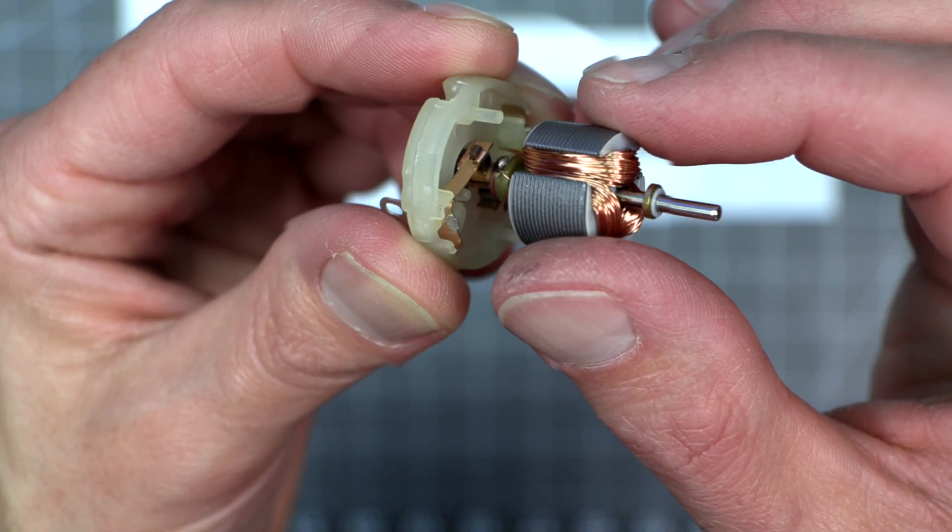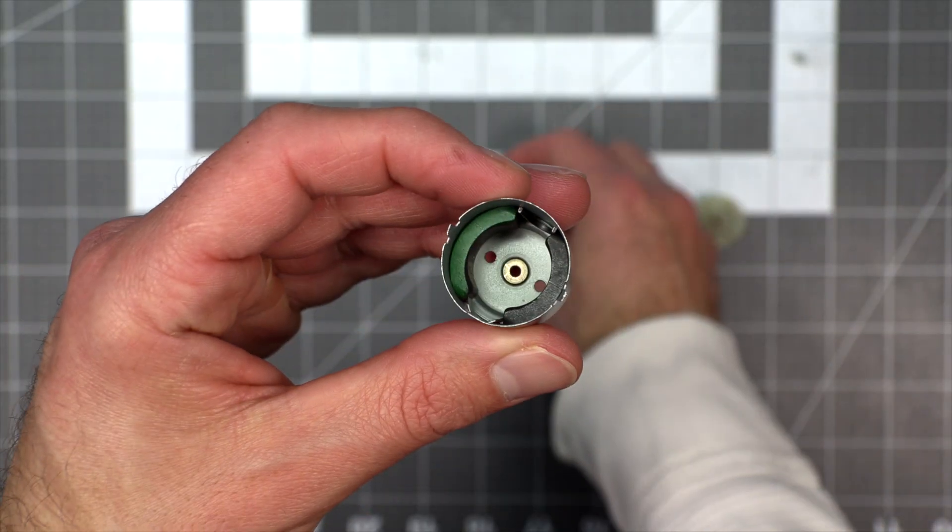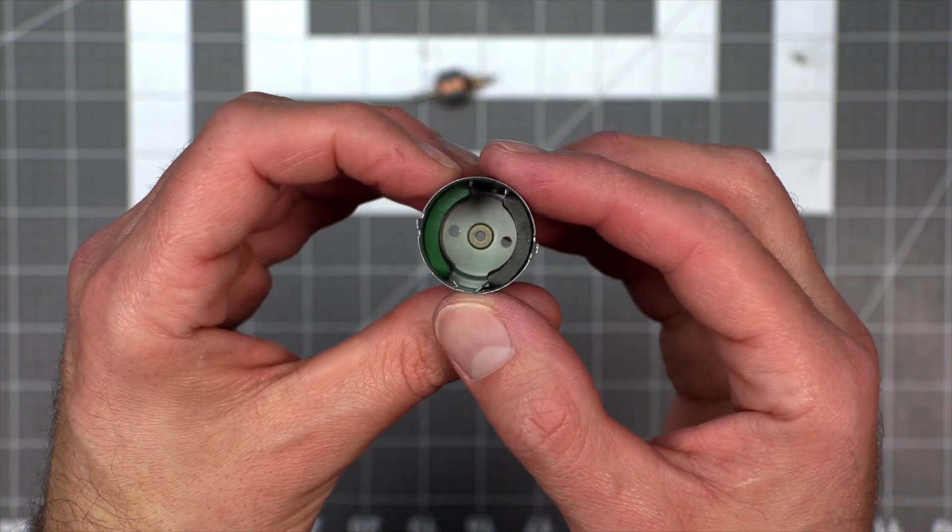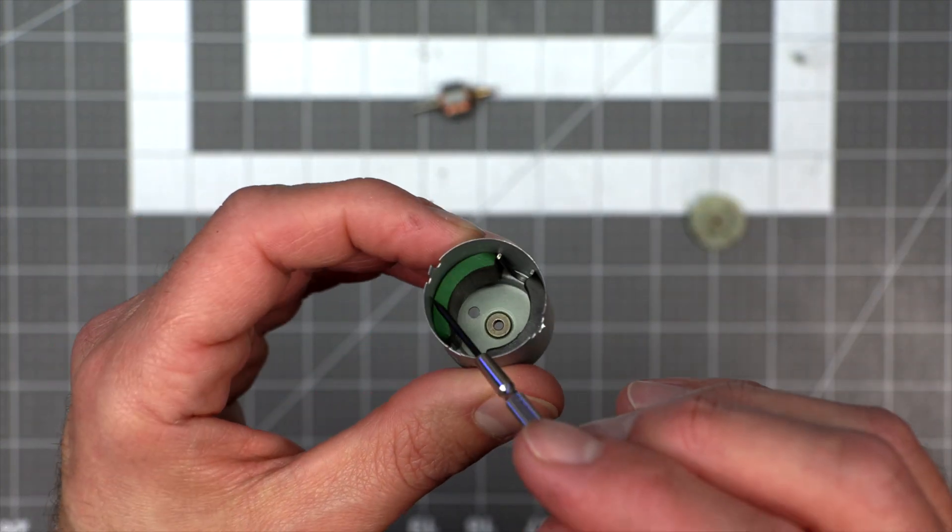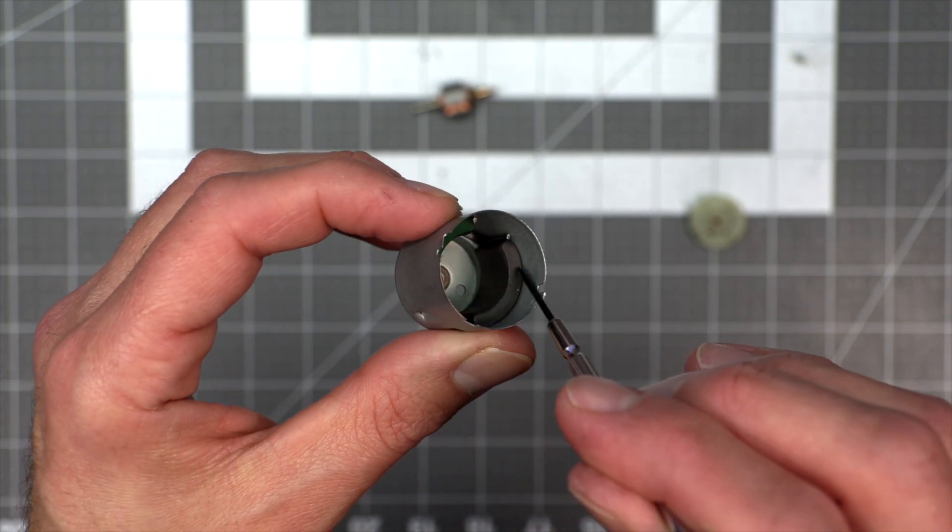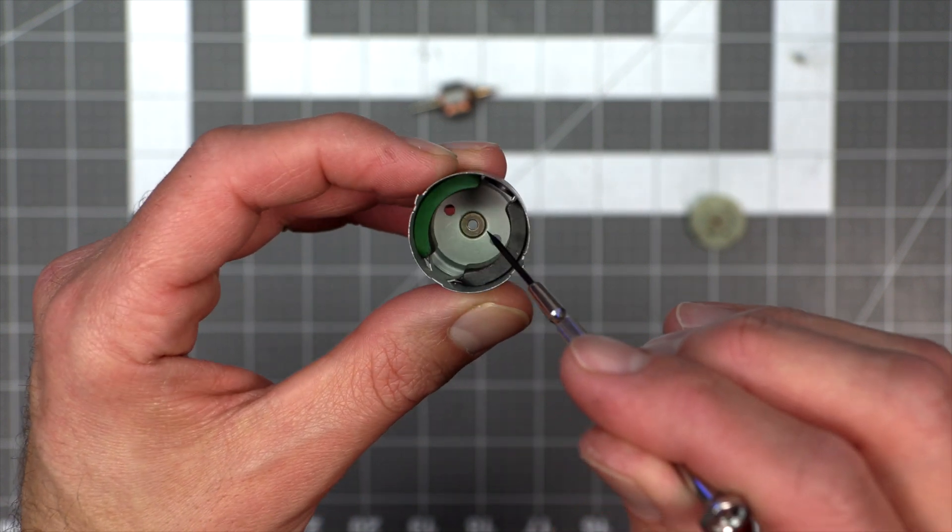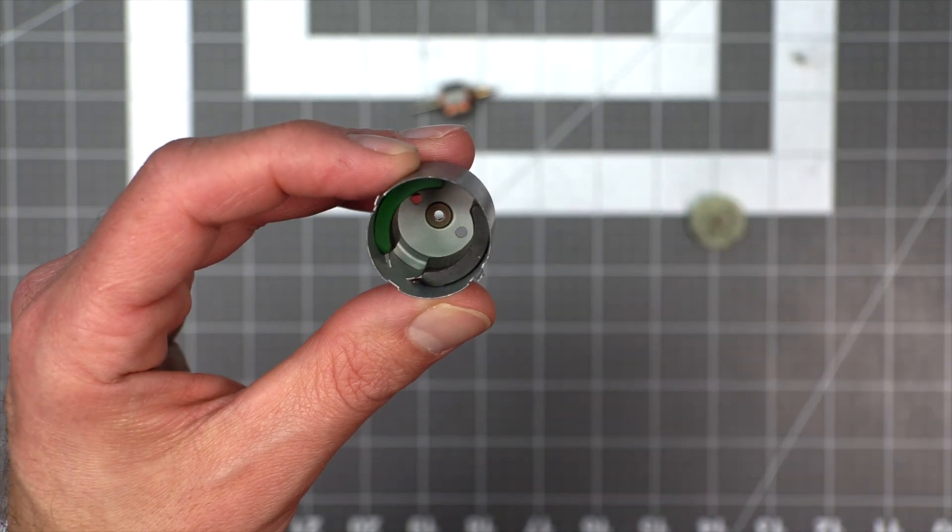And round and round it goes. Inside the casing of the motor, you can see the permanent curved magnets. They are opposite polarity, so one of them north pole is facing in, the other south pole is facing in. This part of the motor is called the stator, which means it is the stationary part of the motor.